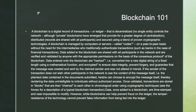Data added to the blockchain is shared with all participants in the network and verified and validated by anyone with the appropriate permission, on the basis of a consensus protocol. Data entered onto the blockchain is hashed — converted into a new digital string of a fixed length using a mathematical function — and encrypted to ensure data integrity, prevent forgery, and guarantee that the message was created and sent by the claimed sender and was not altered in transit. If a sender does not wish other participants to see the content of the message, they can choose to encrypt the message itself, rendering the data unintelligible to individuals without authorized access. Once validated, transactions are stored in blocks and chained to each other in chronological order using cryptographic techniques.